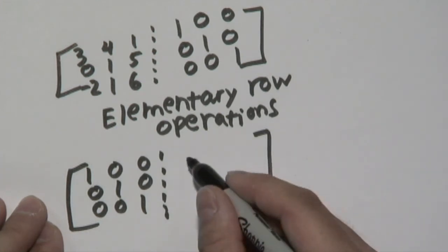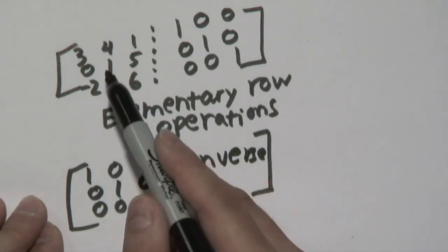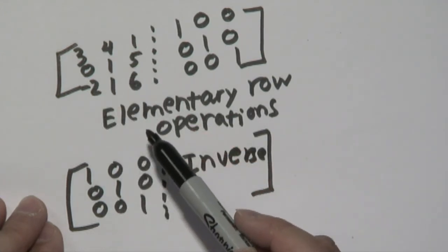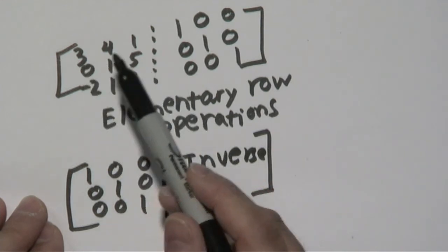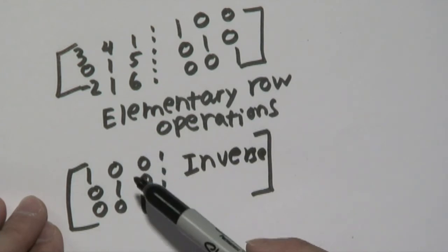But the numbers that will be here will be your inverse of 3, 4, 1, 0, 1, 5, negative 2, 1, 6. But all you have to do is, through the simple task of applying row operations, there may be numerous, but it's worth the effort, you'll have the inverse matrix that you're looking for.